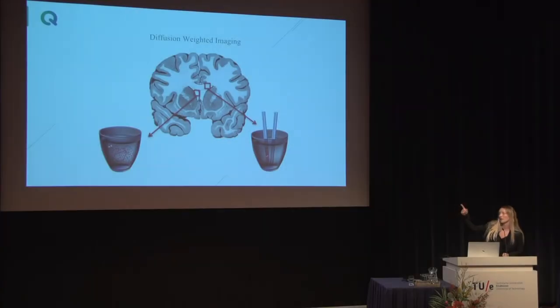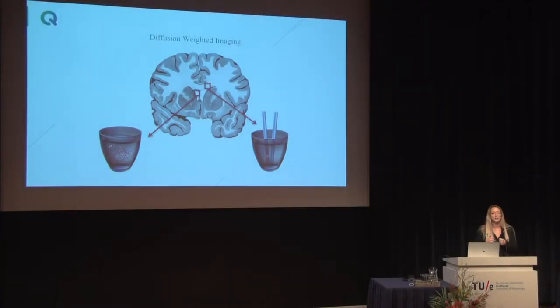The concept of diffusion-weighted imaging is simple, though the math behind it is complex. The brain has a lot of water, and this water is diffusing. In parts with no structure, like the ventricles, the water diffuses randomly — like a glass of water without straws. But where there are fiber bundles — analogous to putting straws in the water — the water molecules are hindered by the structure and have a preferred direction. The MRI scanner is sensitive to this probability density function, and by knowing the maxima, we know in which direction there are fiber bundles.